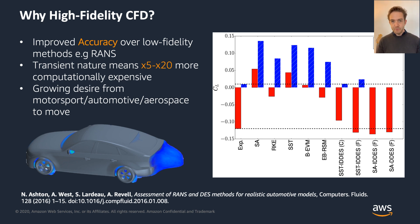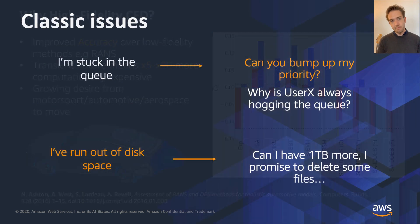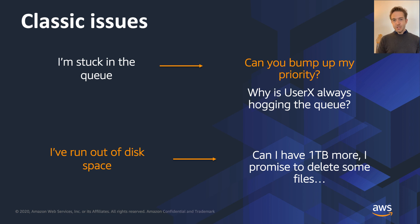How do we quantify the accuracy improvement? For publicly available models like the DrivAer road car geometry, the evidence is clear. Focusing on the estate-type vehicle, the low-fidelity RANS results on the left actually get the sign wrong — predicting lift when there is actually downforce — whereas the high-fidelity hybrid methods on the right get it right. This is why major car companies are now moving to these hybrid methods, even though they can be five to twenty times more computationally expensive.